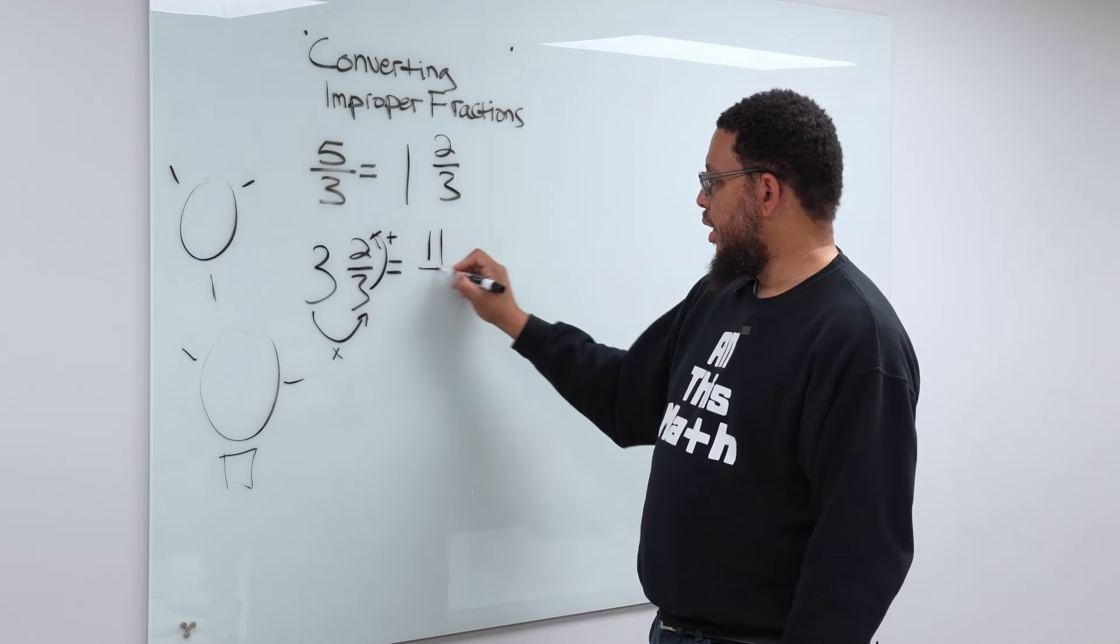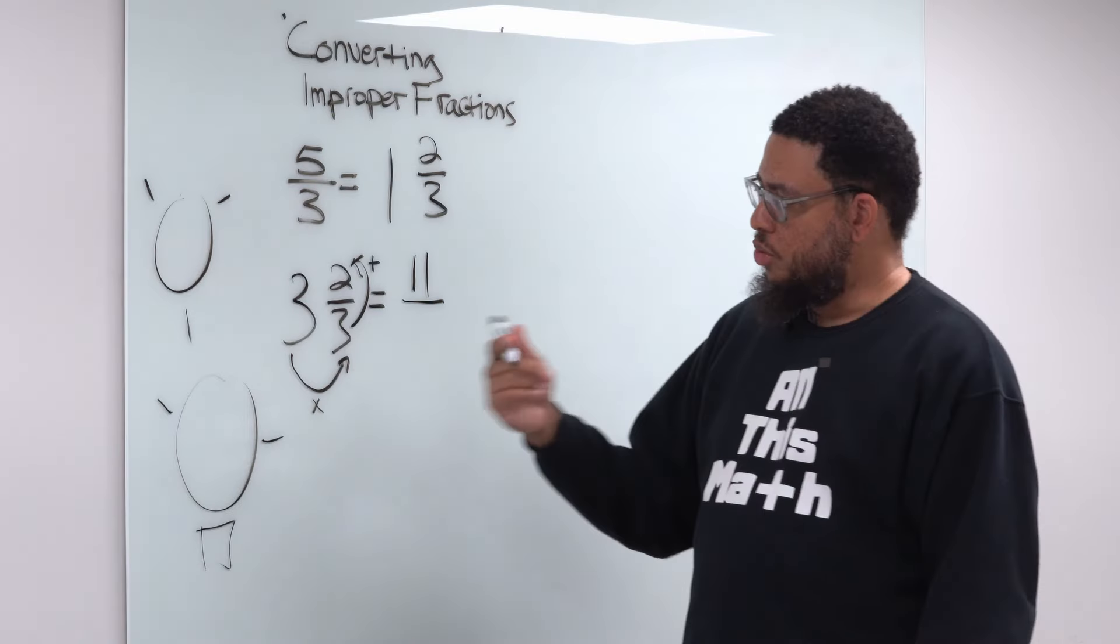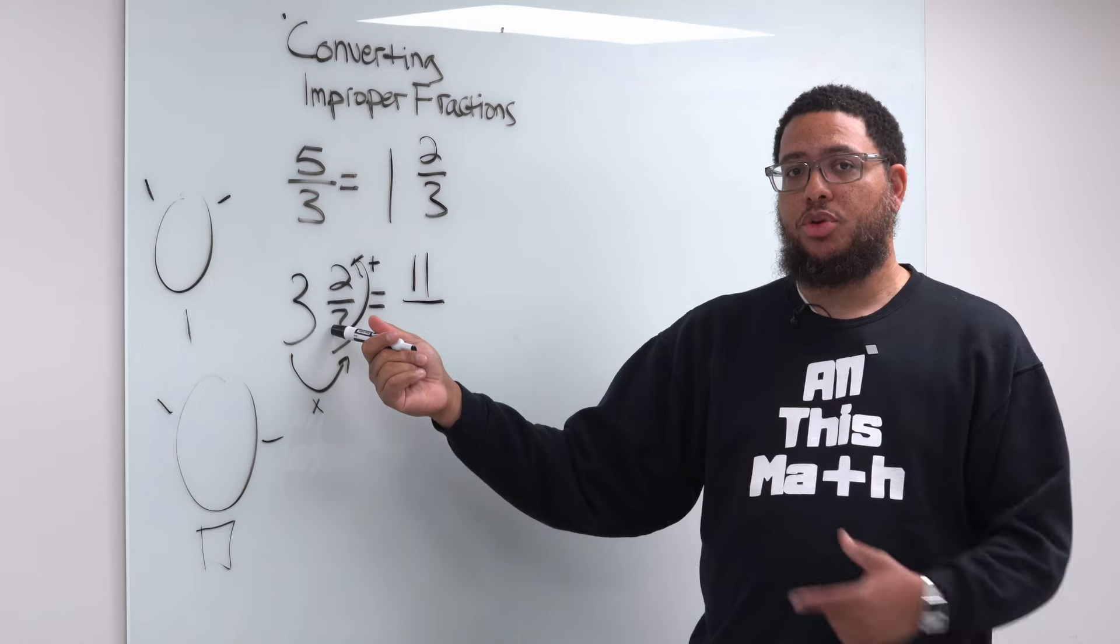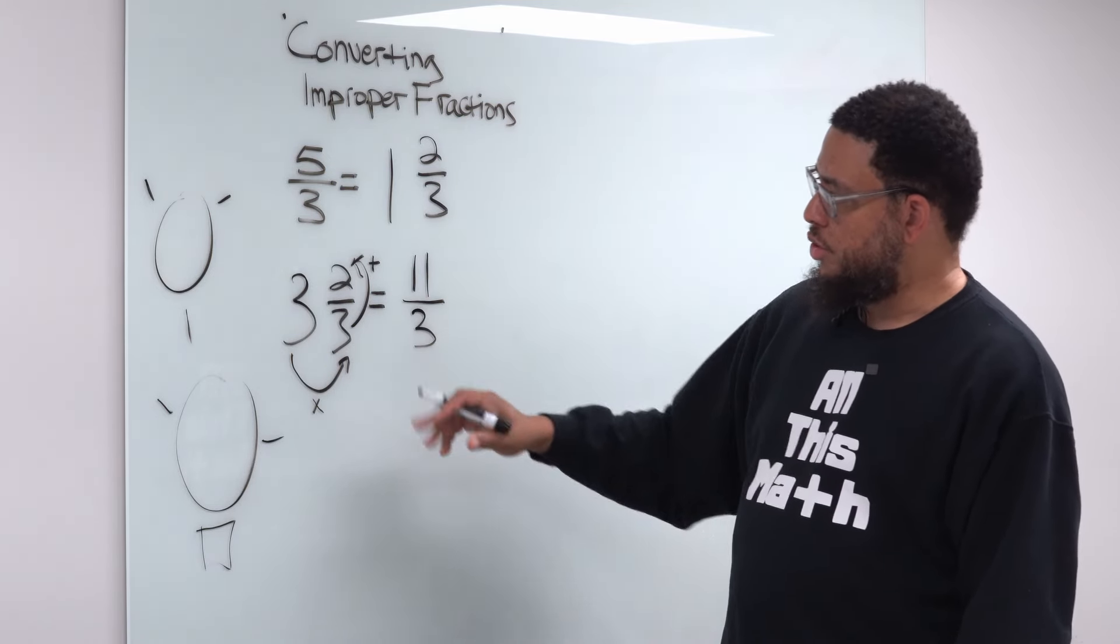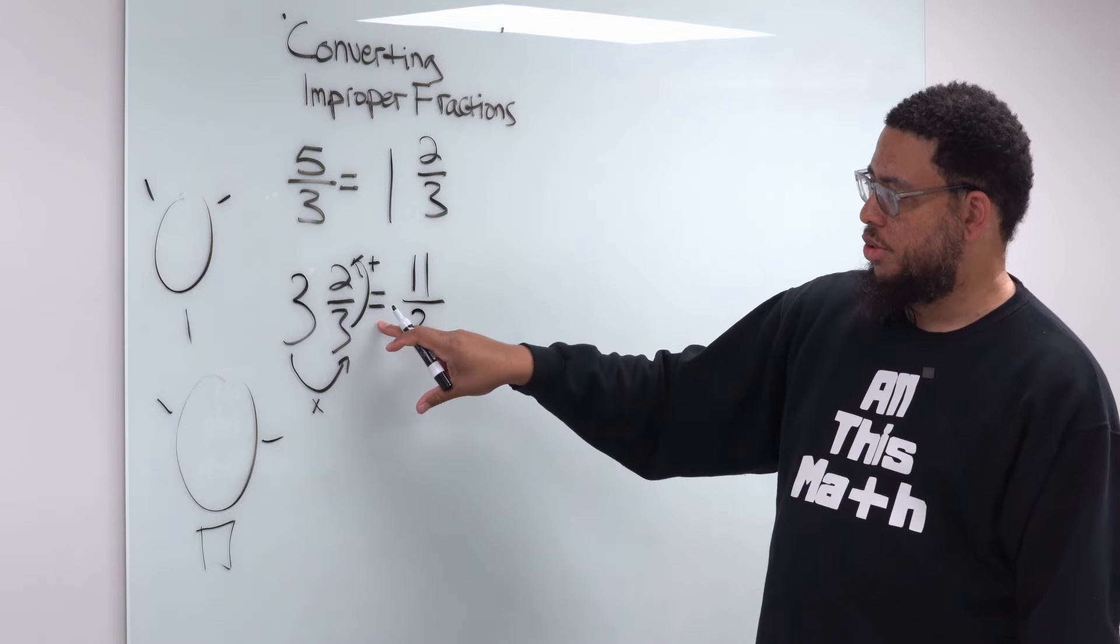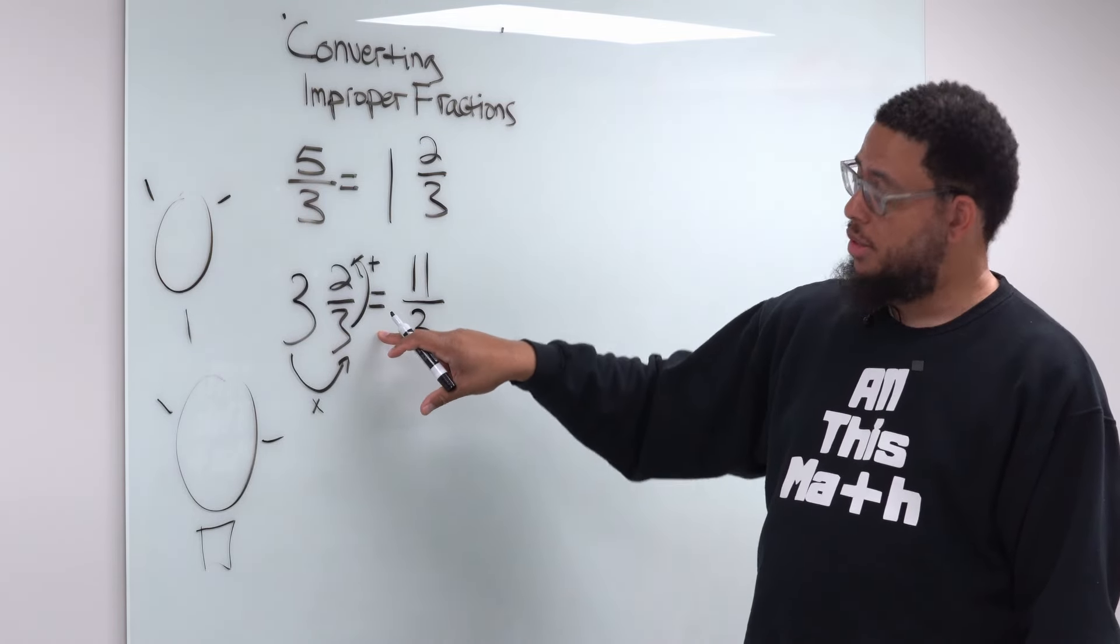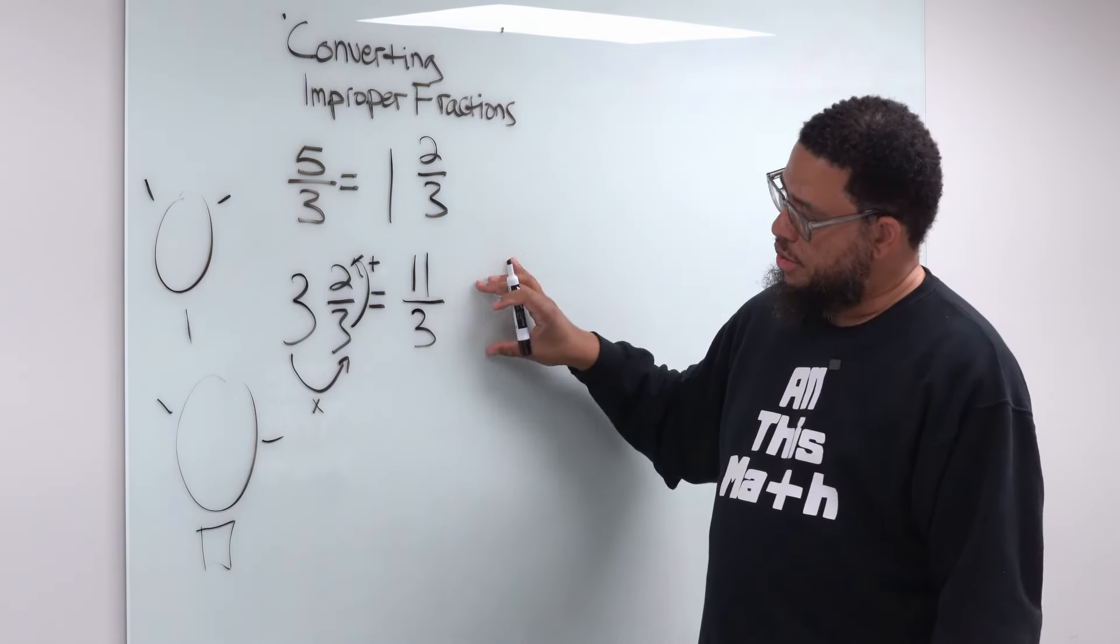And then your denominator is the easy part. You basically just copy whatever denominator you had in your fraction and just put it over here. So that gives us 11/3. So 3 and 2/3 is equivalent to 11/3, right? Because that's what the equal sign means. And this is one way to find that.